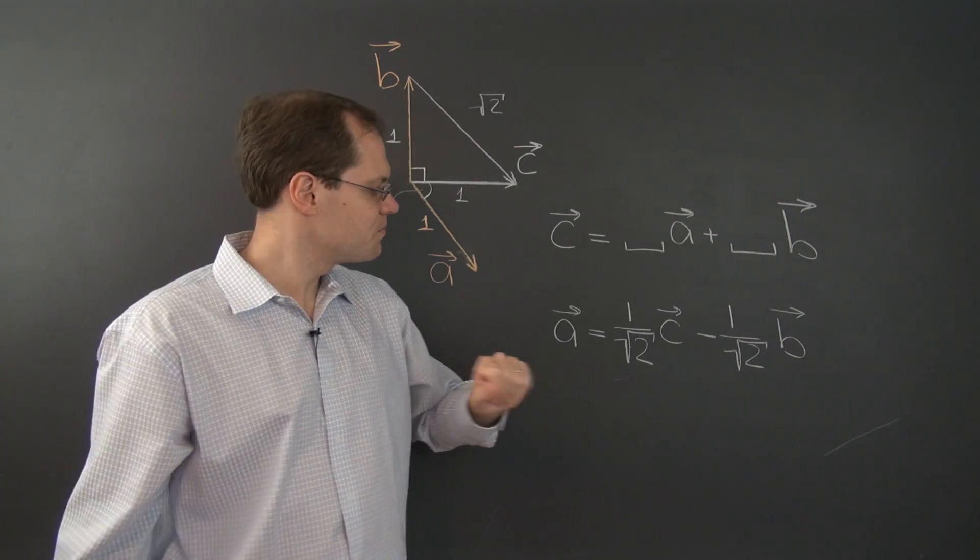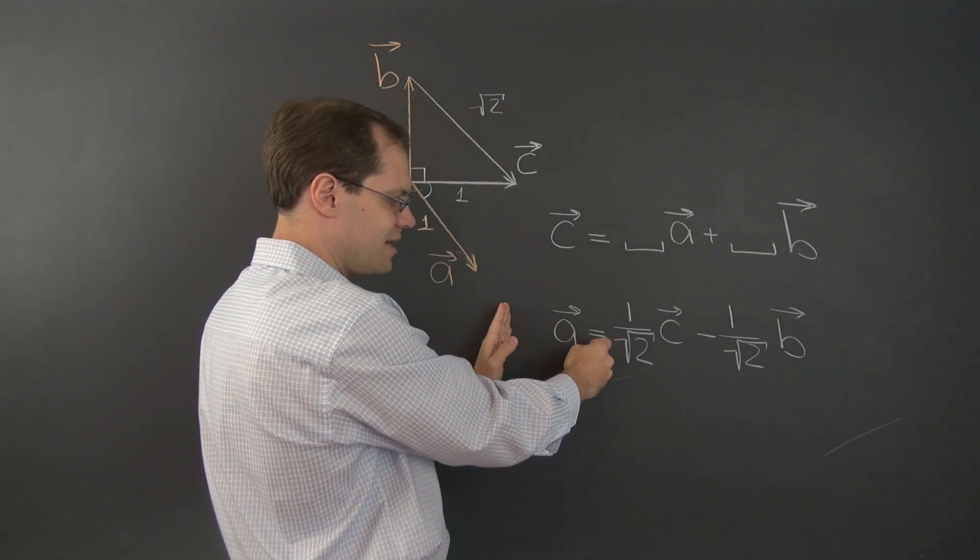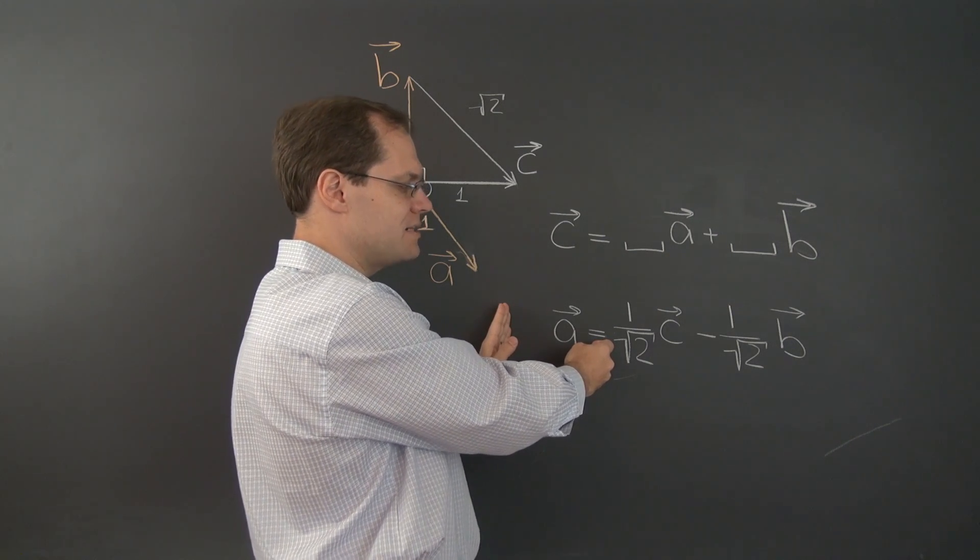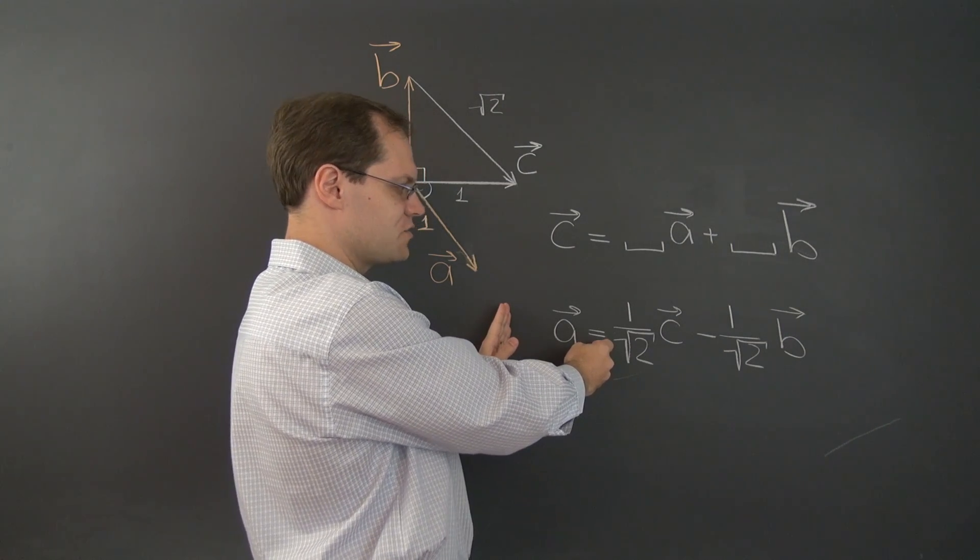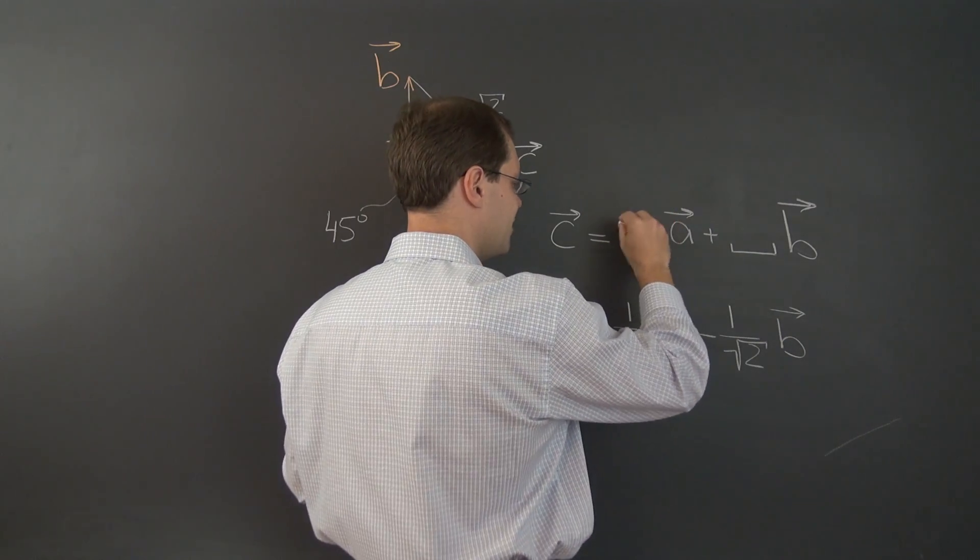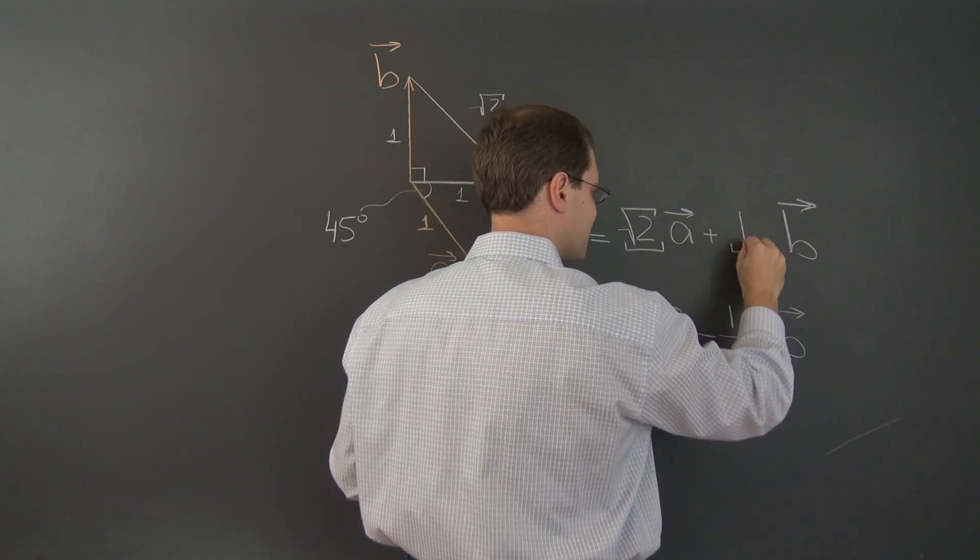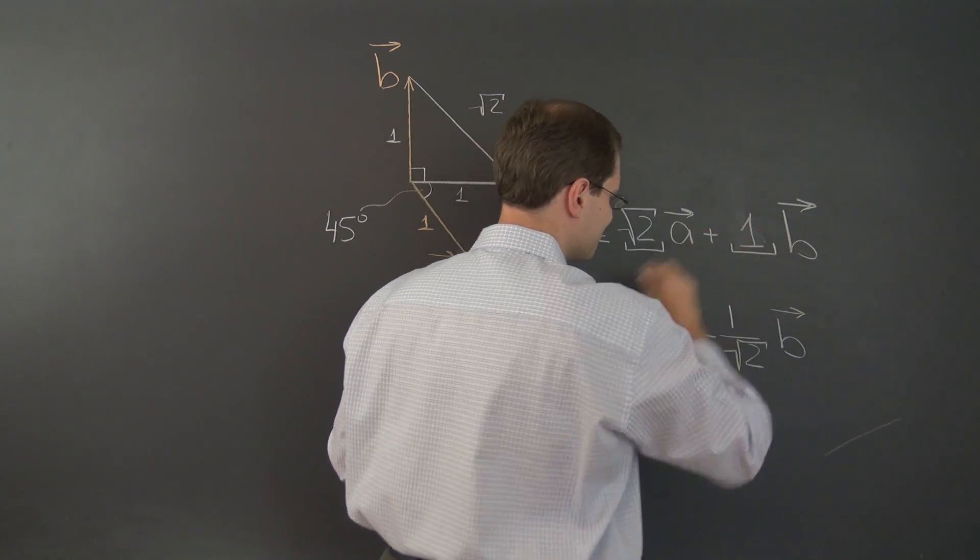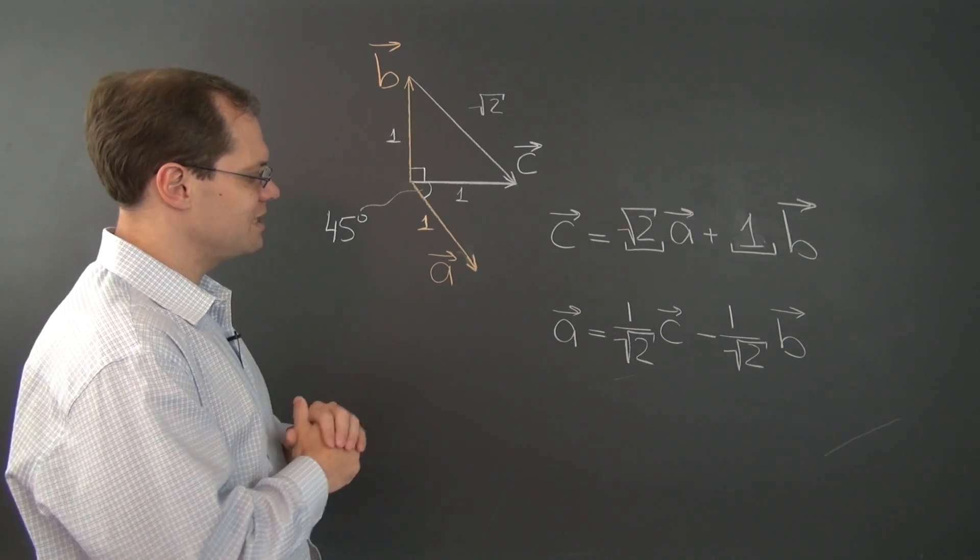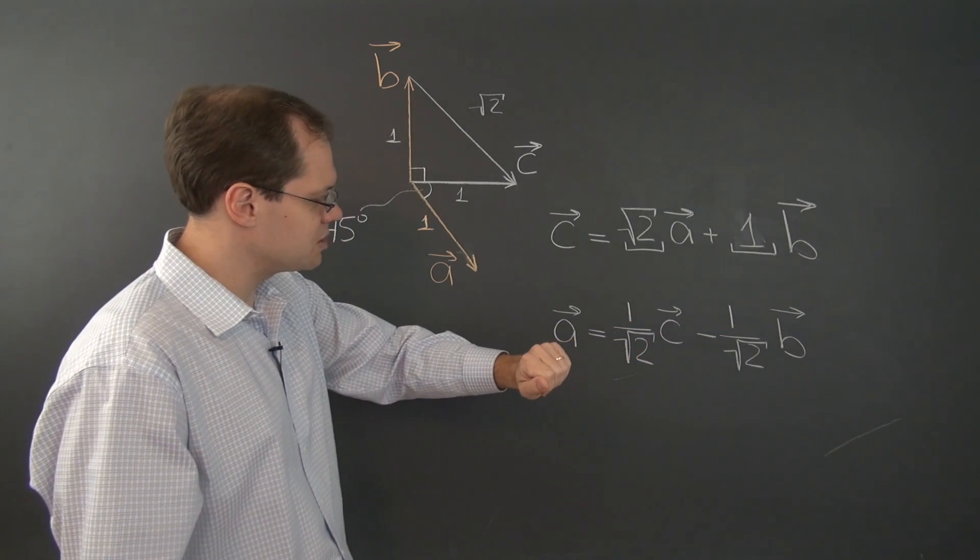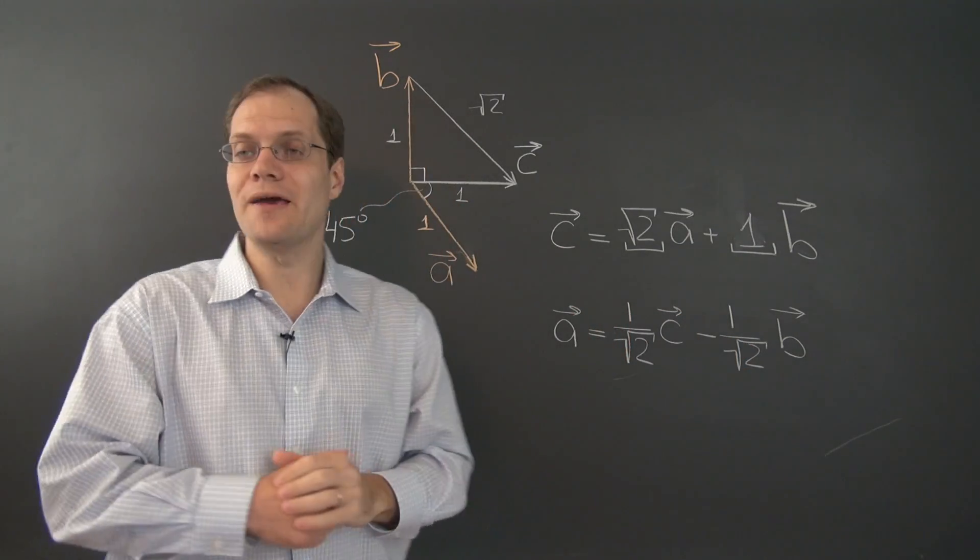And now all we have to do is solve for C, which of course can be done by taking this term and bringing it over to the left-hand side, and multiplying both sides by square root of 2. So C equals square root of 2 times A plus B. I stumbled because in my mind I was making sure that these numbers are correct and not reversed. But I believe that is correct because when you multiply both sides of the equation by square root of 2, A picks up the square root of 2 and B stays with 1. Okay, so there you go.